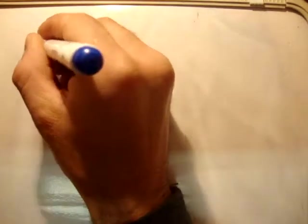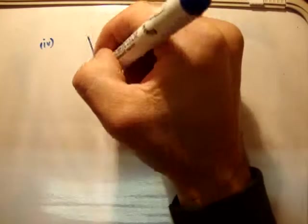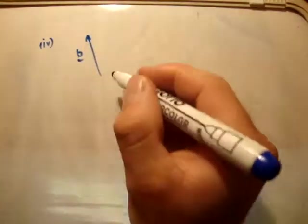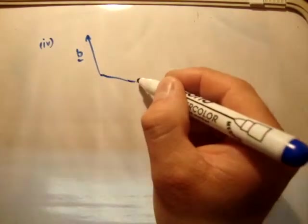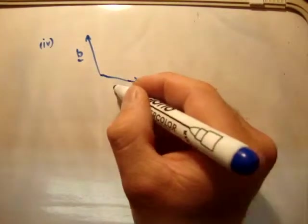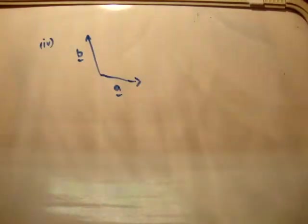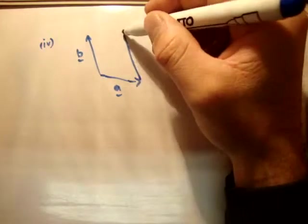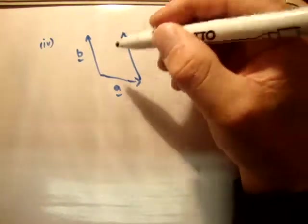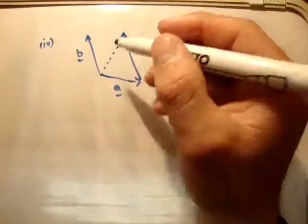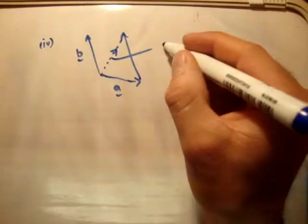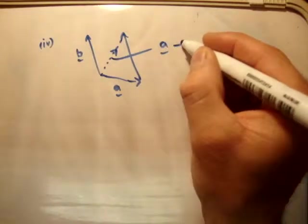Part 4. You're given vector B and vector A. I'm going to draw a second B and draw my resultant vector from the tail of the first to the head of the second. That resultant vector is A plus B.